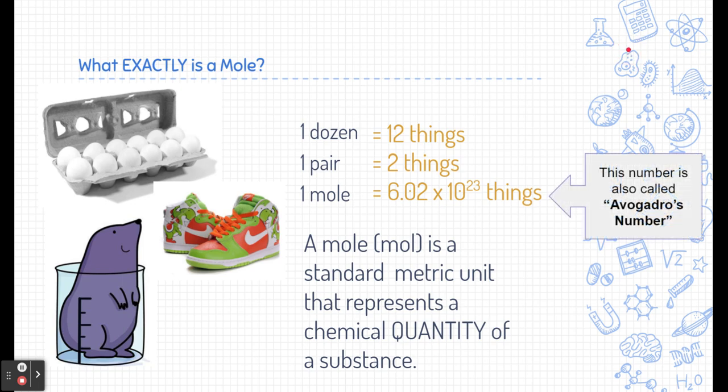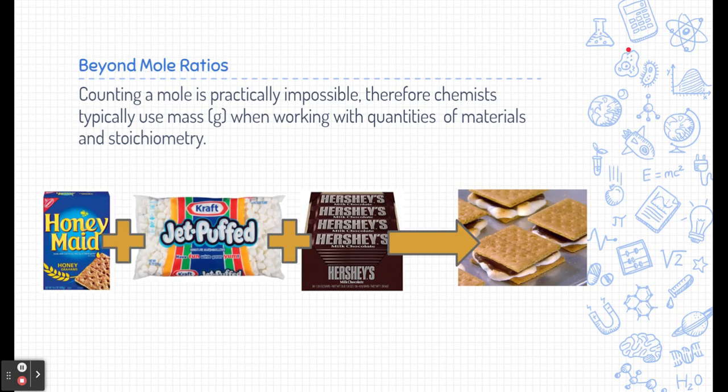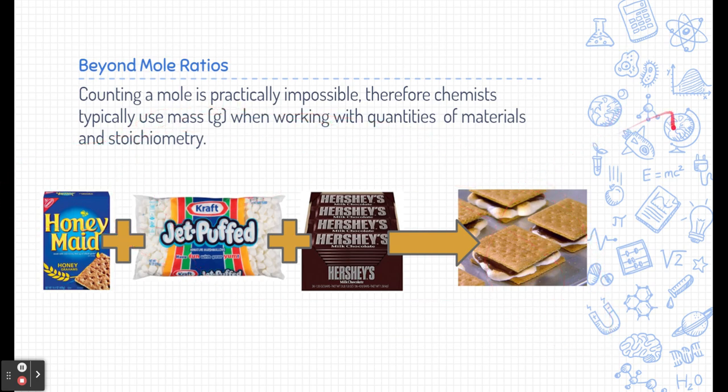This number has a name — it's called Avogadro's number. Now, moles are useful in stoichiometry, but counting a mole is not very practical. In fact, it's impossible for a chemist to count 602 sextillion things. Therefore, we typically use masses when working with quantities of material, especially when working with large quantities.